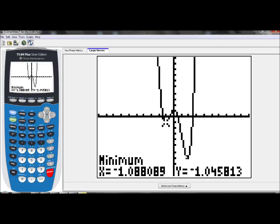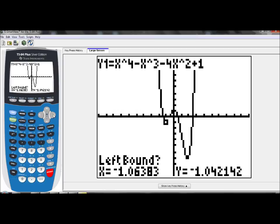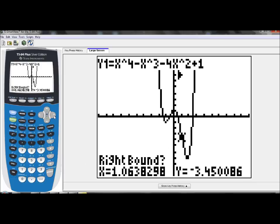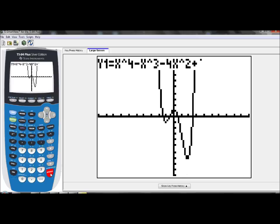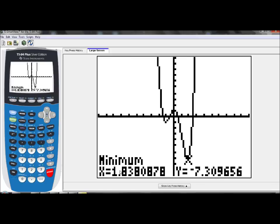And I'm going to repeat the process for this relative minimum value. So second, calc, minimum. Again, left bound. So just mark a point to the left of this. Hit enter. Right bound. Mark a point to the right of it. Hit enter. Guess. Hit enter again. And there is the next relative minimum, 1.84 and negative 7.31. So that's how we found our relative minimum. We see we have two low points, so we had to do it twice.